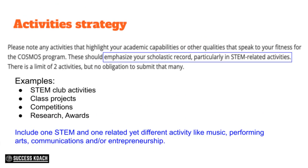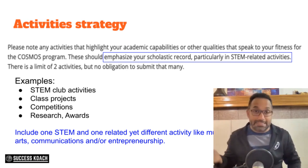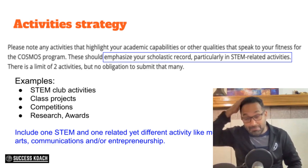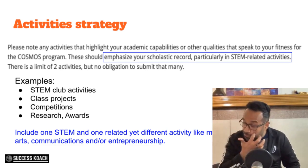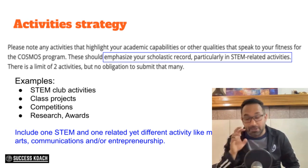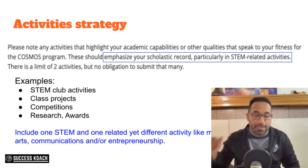Now let's talk about the activities section. You're allowed to put only two activities. I would say put two, and make sure they are STEM-related. Your second activity could be a little different yet should still show some connection to STEM — for example, performing arts, music, communications, or entrepreneurship all have frameworks that can overlap with STEM. You don't want to talk about track running as an activity within Cosmos. You have 50 characters for each activity, so make sure you put the right spike to showcase your value.